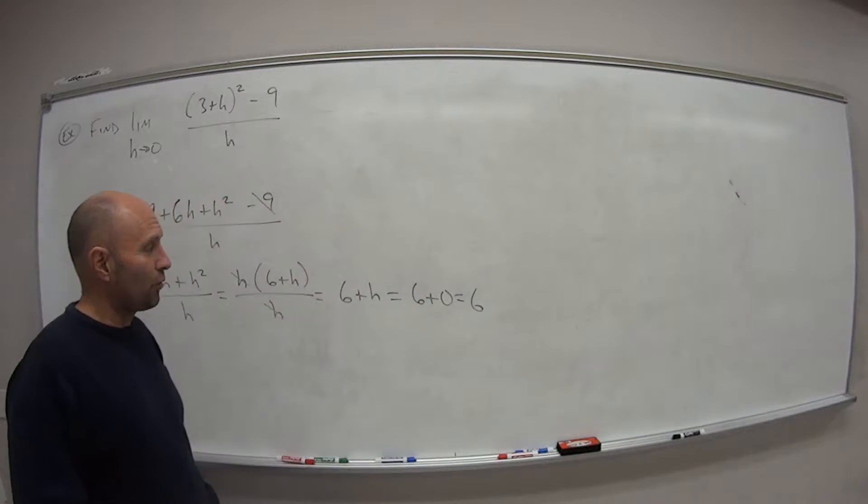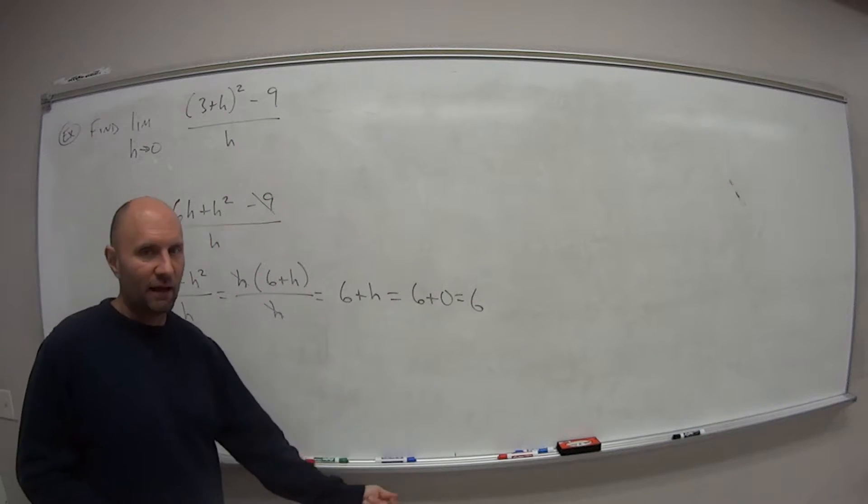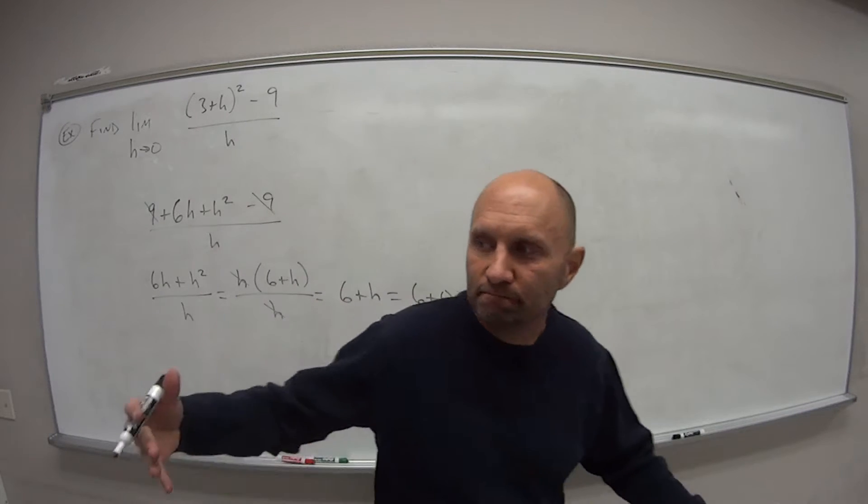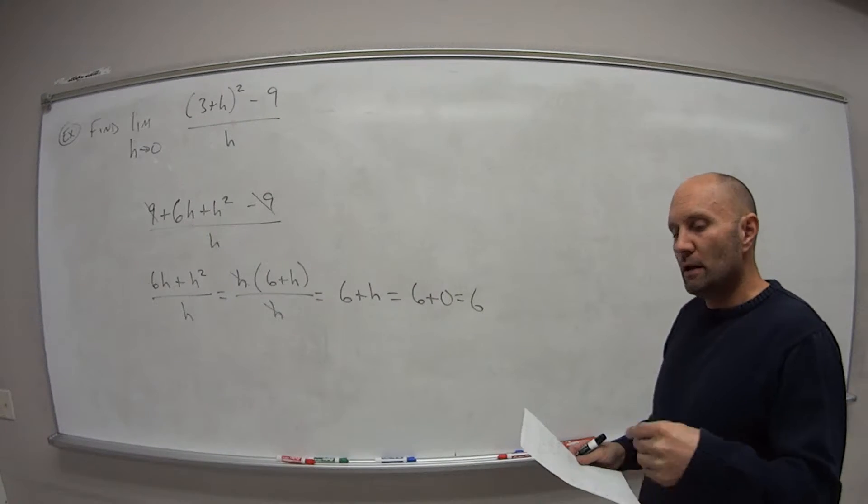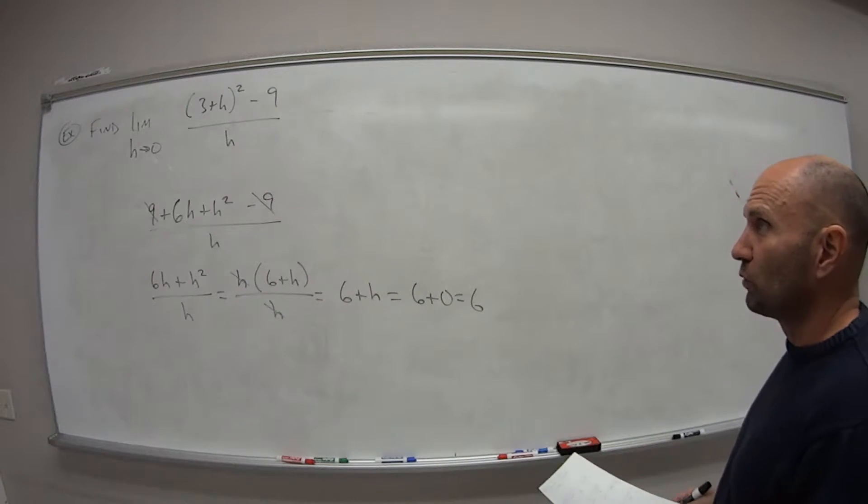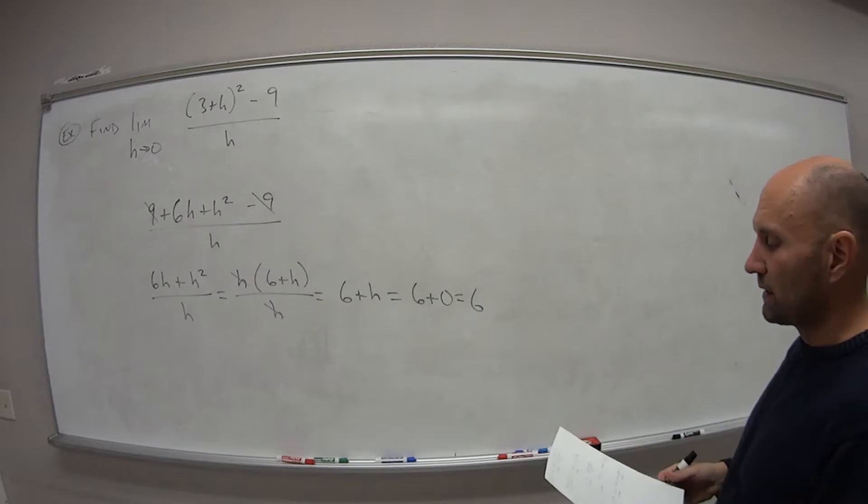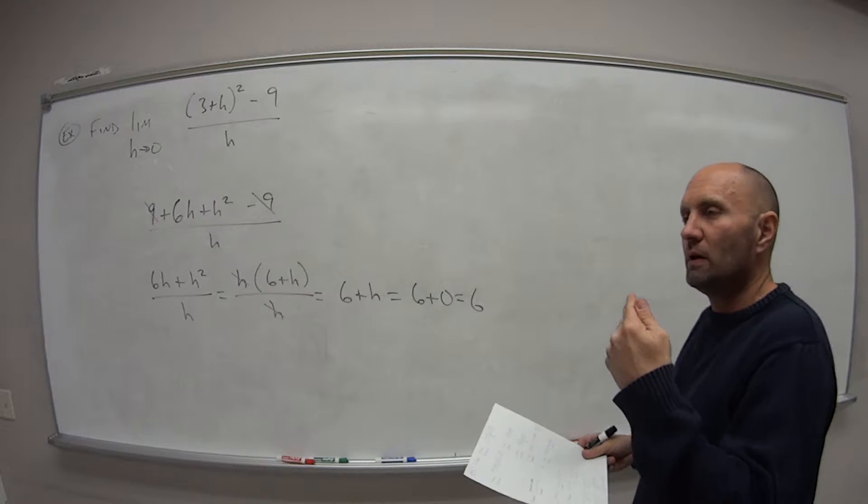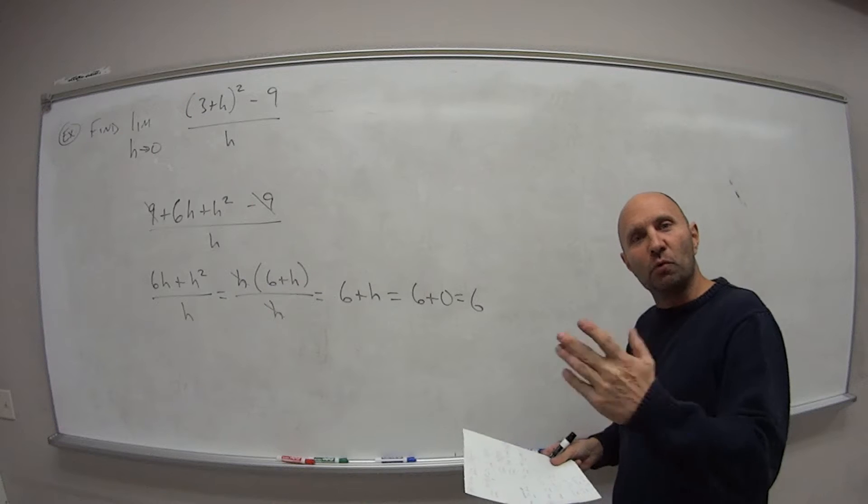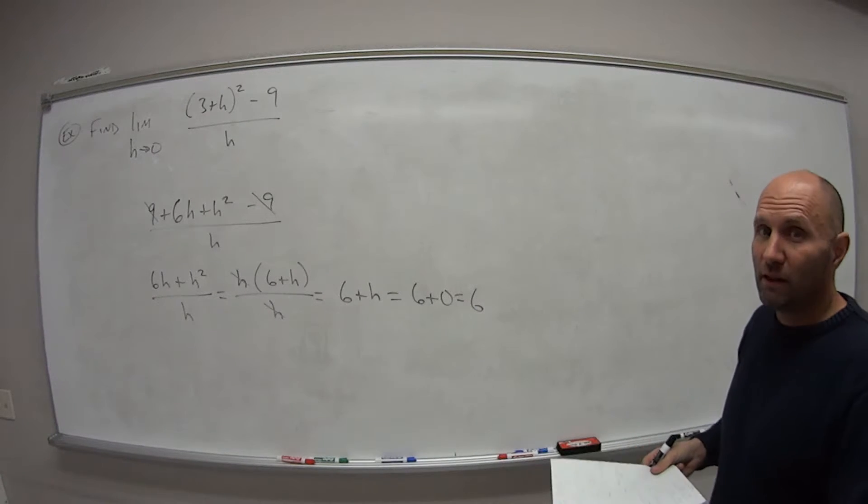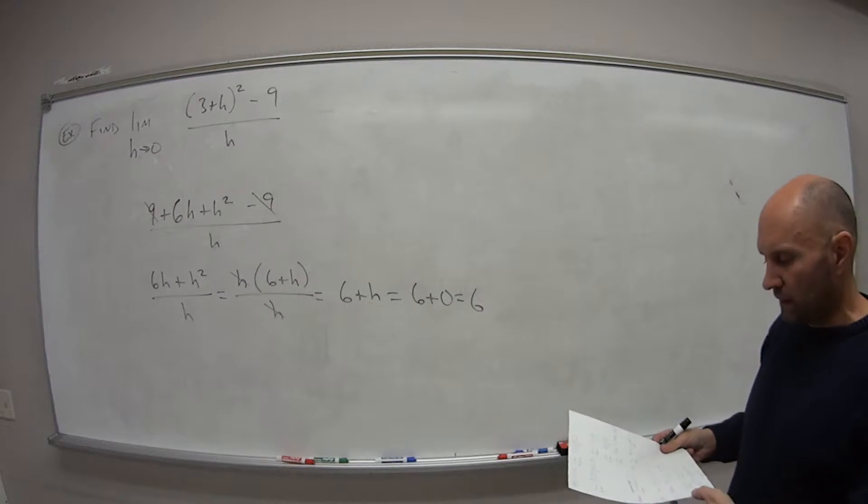So again, you can see it's a lot quicker than trying to pick values from the left, values from the right. What does it give us? But we do have to worry about that sometimes if we can't break this down. We need to figure out what are our values from the left? What are the values from the right? Are they the same? And if so, then that's our limit.